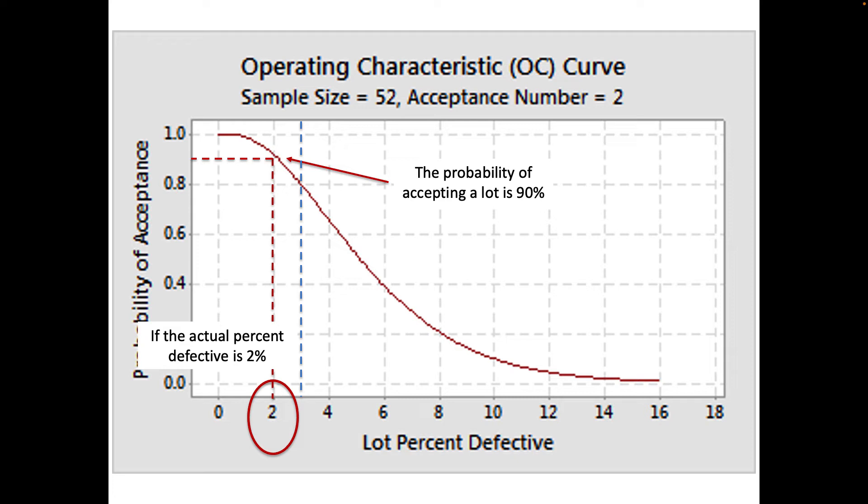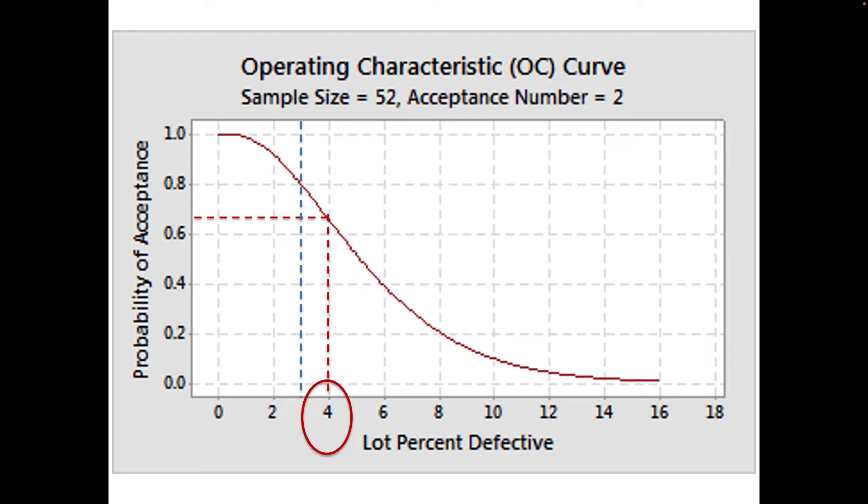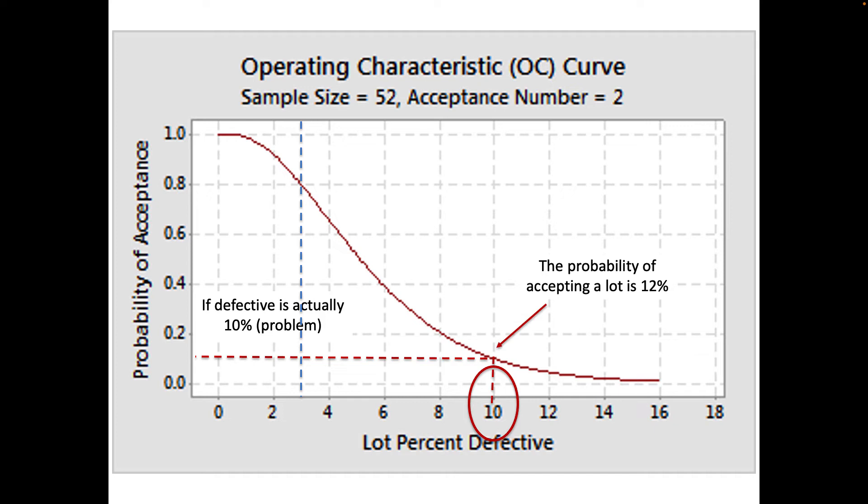When we look at something like if it's four percent which is above what we kind of want it to be, right we want it to be three, but if it's four percent the probability of accepting it is 65 percent which is not great. If we don't want it to be accepted at four percent but 65 percent of the time we're going to accept it. So this is not exactly the characteristics we want. But let's say we actually have a 10 percent defective rate in our lot, the probability of accepting it is only 12 percent so that's pretty good. We're not going to accept lots very often that have this much of a defect and that's kind of how we read this curve.